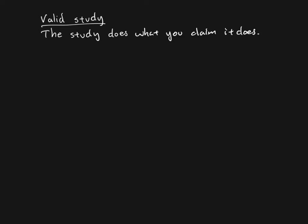We've talked about the idea of having a valid study, by which we mean that the study does whatever it is that we're claiming it does. So if we claim that the study provided good evidence and reasons for believing something, for drawing certain conclusions, then it's a valid study if it really does provide that evidence. I want to get more specific now and talk about two different subtypes of study validity.